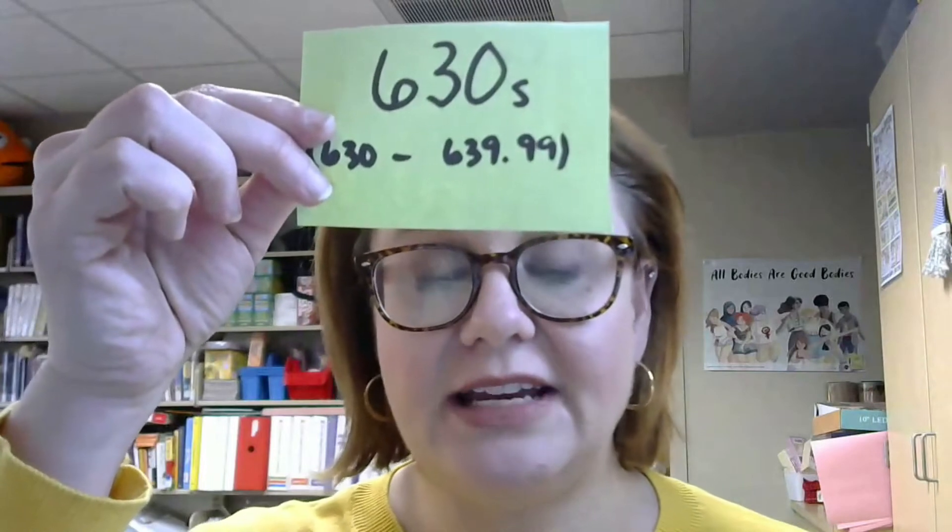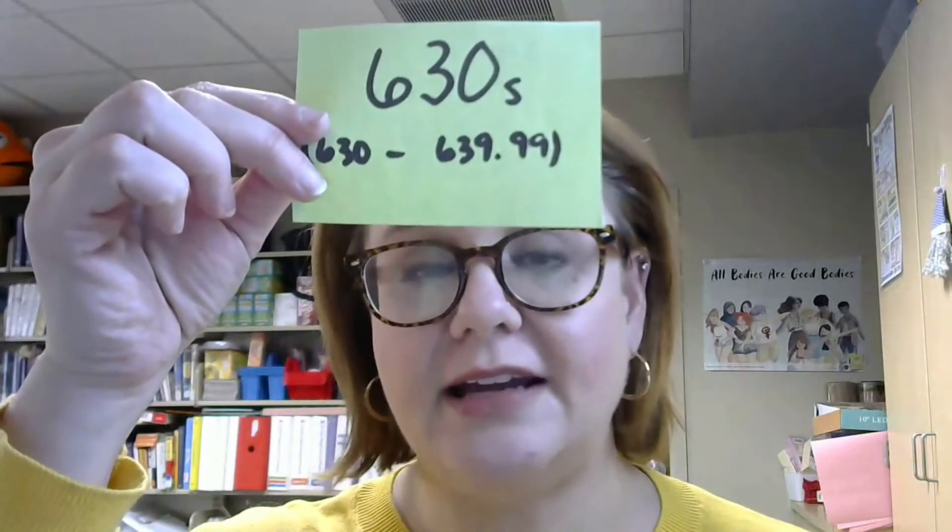Next we have the 630s — that's 630 to 639.99 — and this section covers agriculture. We know that means farming, and when we think farming we mostly think about crops, but there's more that goes into it. This is where we would find information about different farm equipment. We have lots of patrons in the children's department that love tractors, and this is where you would find information about tractors. But this is also where you find information about animals that are generally considered domesticated work animals — so cattle, horses, and even dogs, since they are domesticated and sometimes used for working purposes. Agriculture is a very broad section that covers a lot of information right there in those 630s.